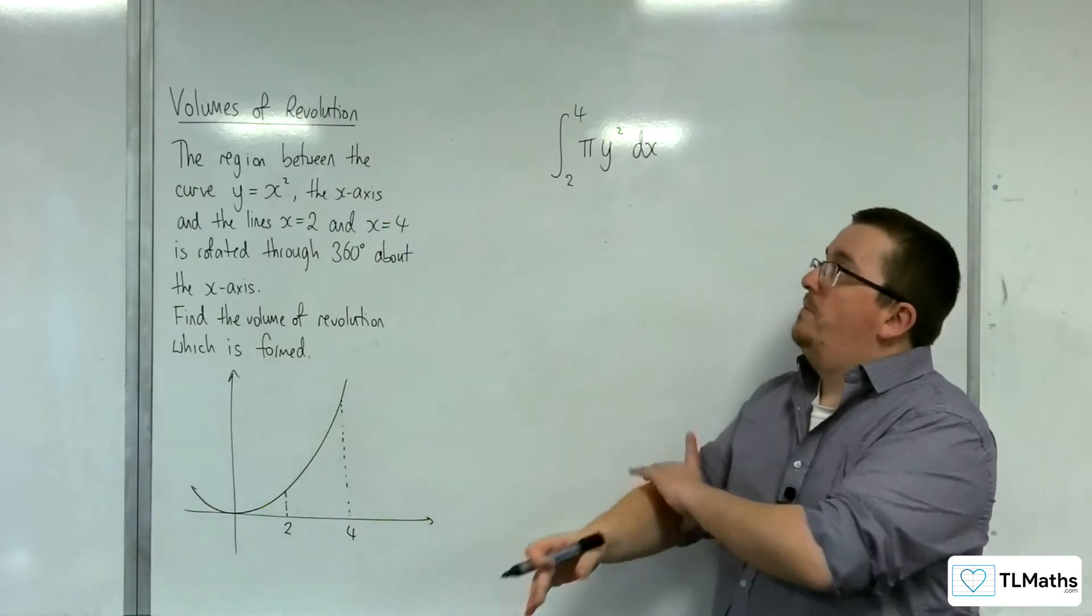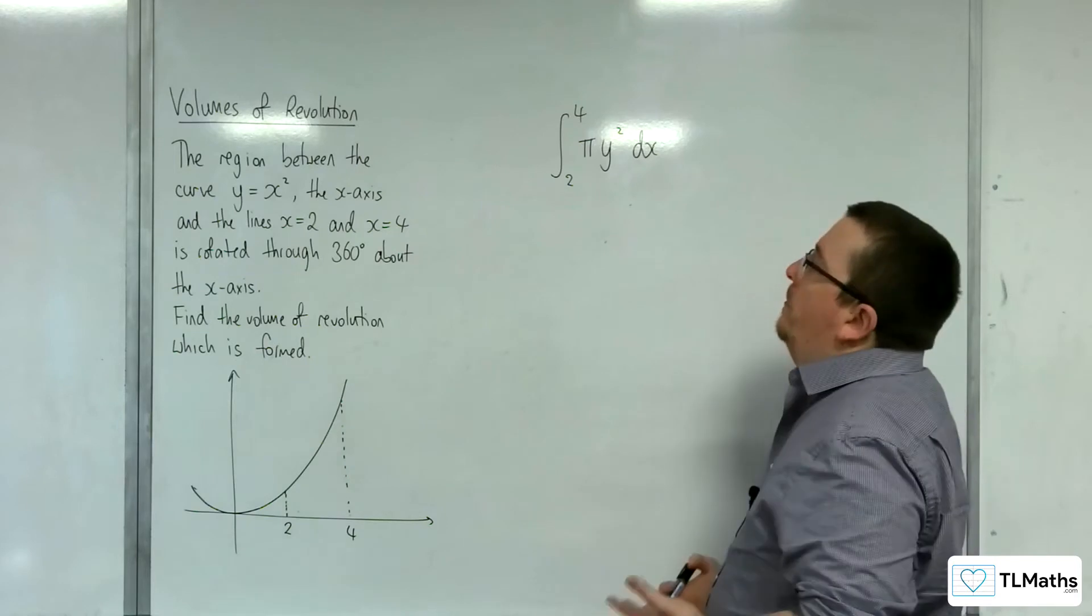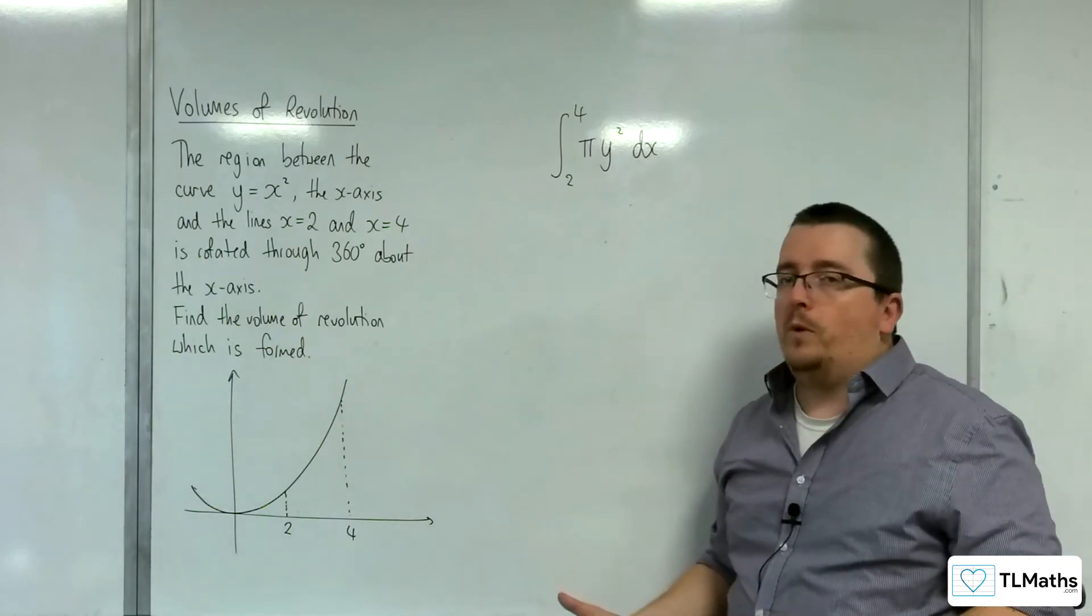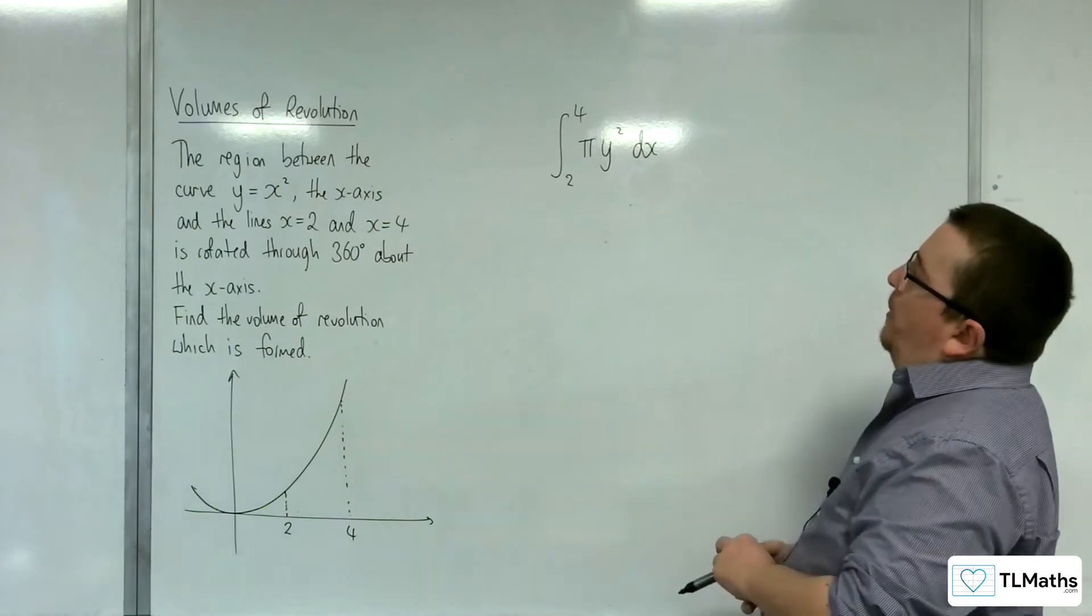So you can kind of remember it in different ways, but some people kind of get confused as, is it pi x squared or is it pi y squared? So pi y squared dx.